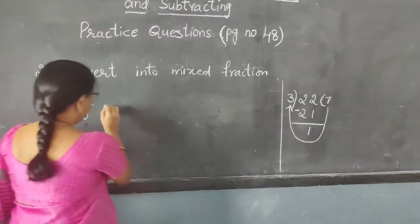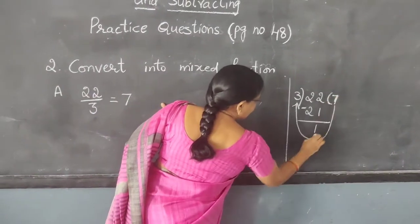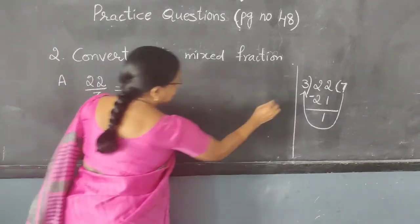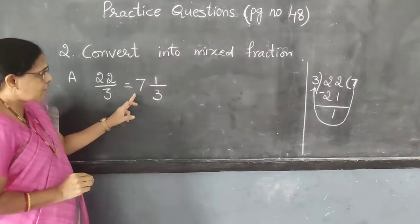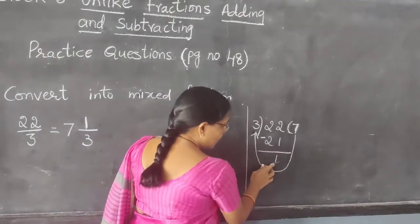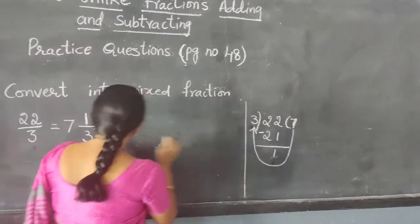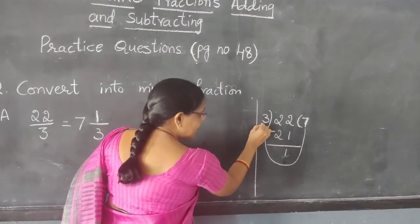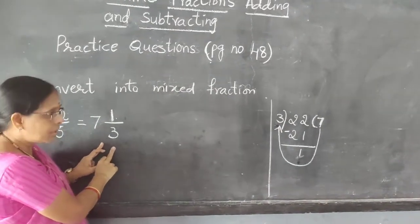You have to write 7 — start from the quotient, which is 7. Then 1 is the numerator part and 3 is the denominator part. So the answer is 7 and 1/3. Here, 1 is the remainder; in the mixed fraction, 1 goes in the numerator. 3 is the divisor and goes in the denominator.